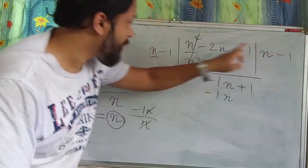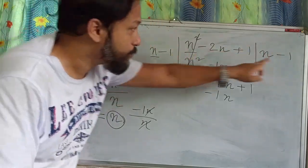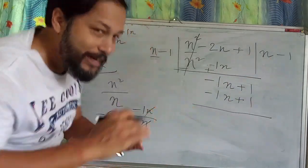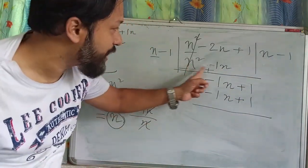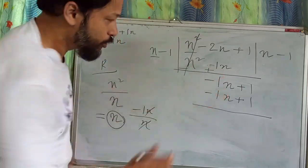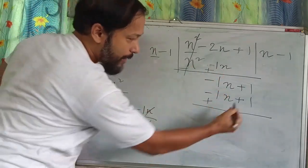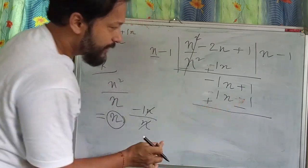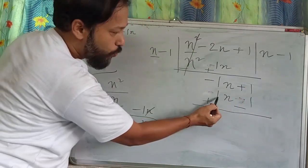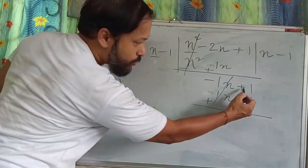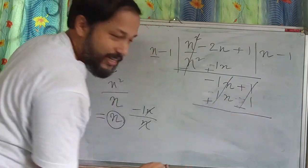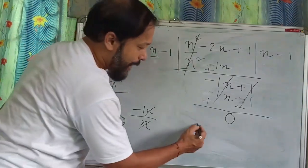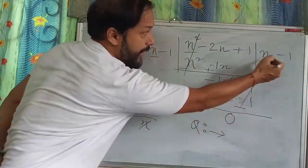Next, minus 1 multiplied by minus 1 gives plus 1. Again, change the sign — minus becomes plus, plus becomes minus. Now minus n plus n cancels, and plus 1 minus 1 also cancels, giving zero. So my quotient is n minus 1.